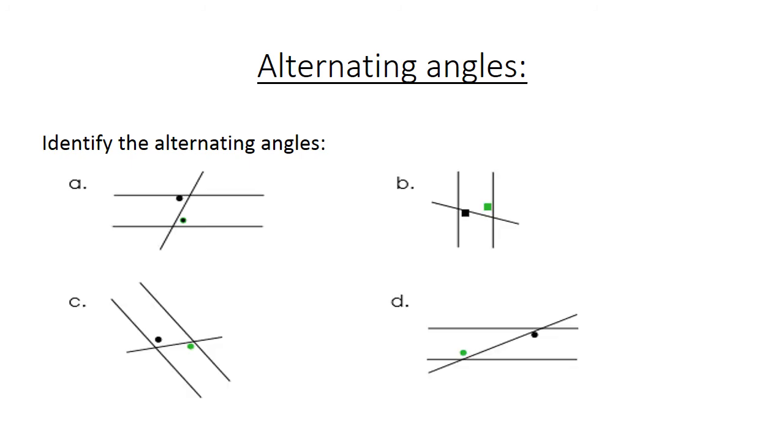Alternating angles. Again, identify your alternating angles. Number A, there we can see it's alternating with the green one. B is also alternating. C also alternating, as well as D.